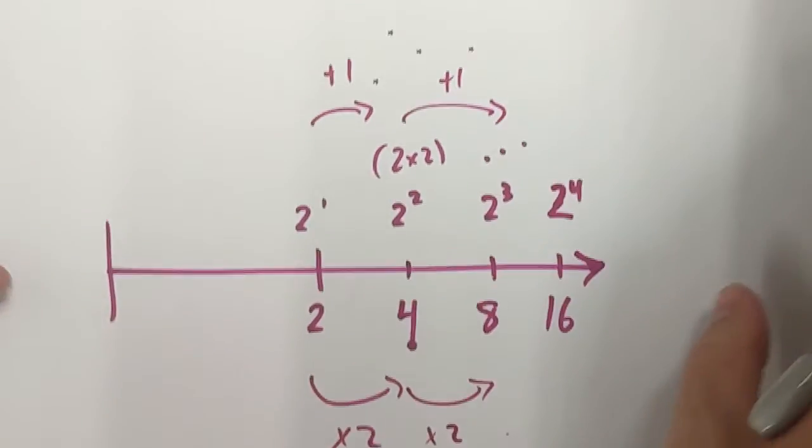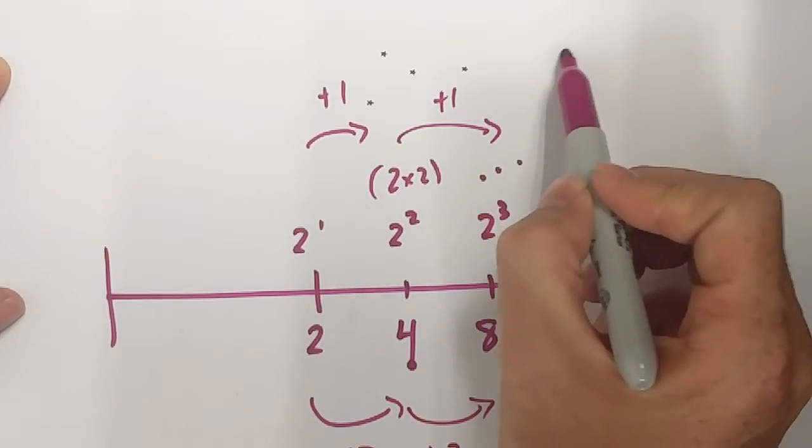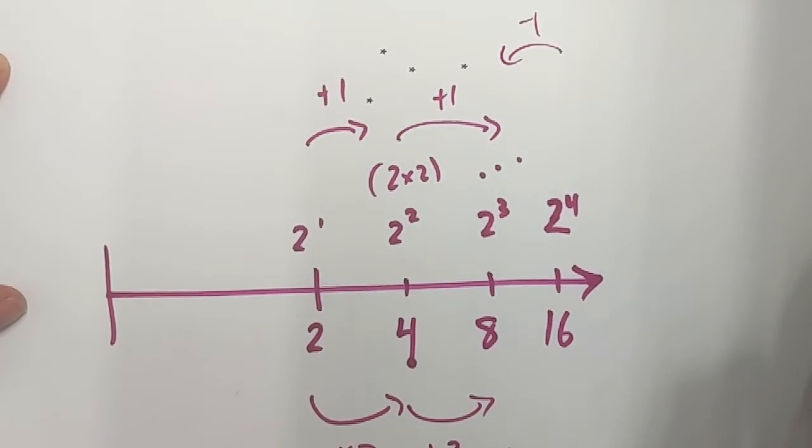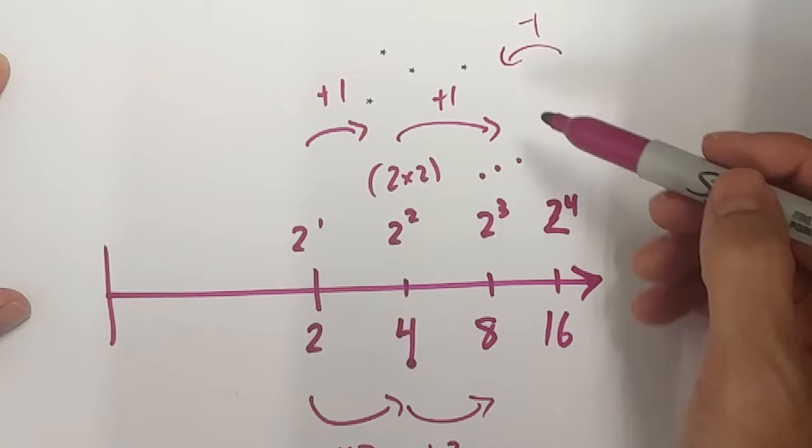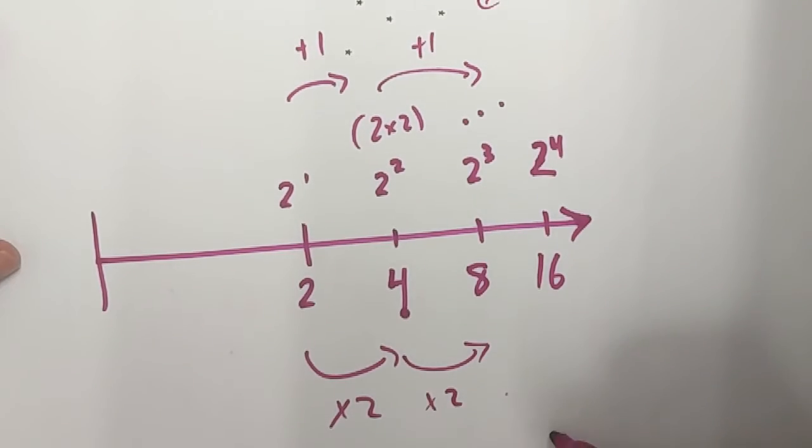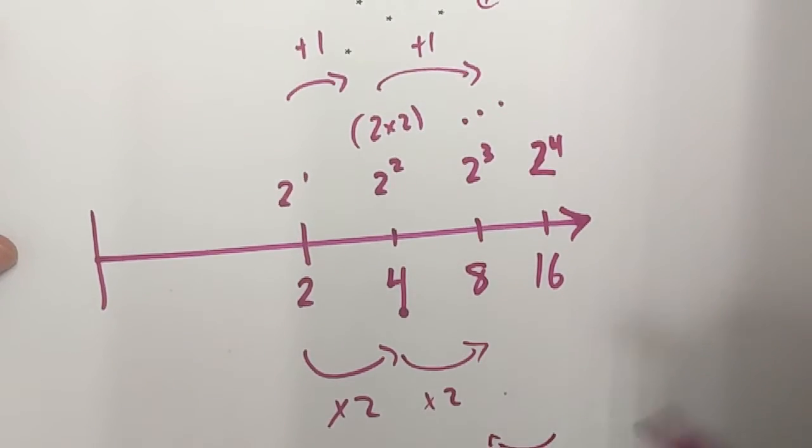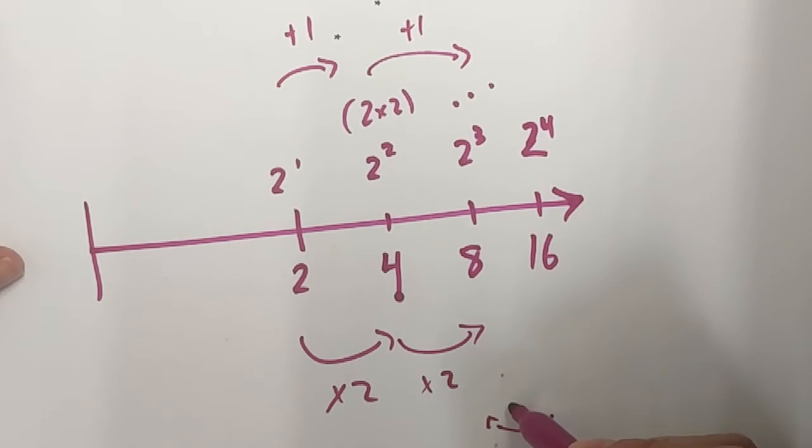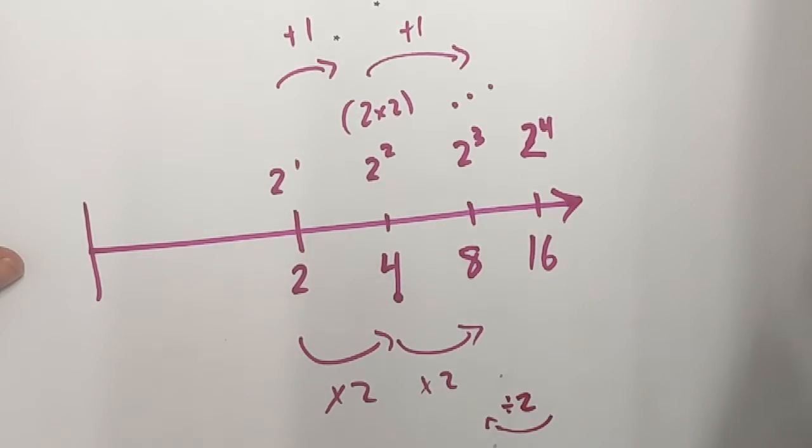Well, what would happen if I worked the other way? If I said, okay, I'm now going to decrease by 1. Well, if I use the same logic, I now come back over here. When I decrease by 1, I have to do the opposite of doubling, which is halving, the same as divide by 2.